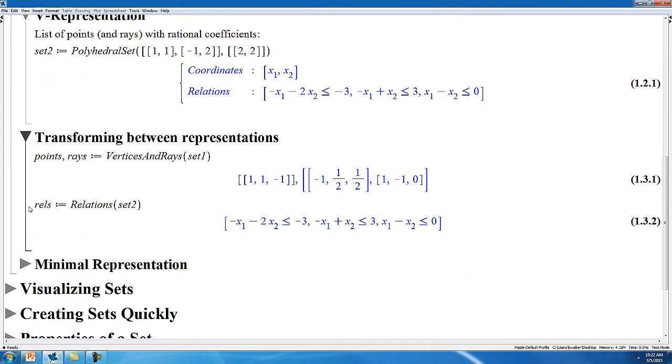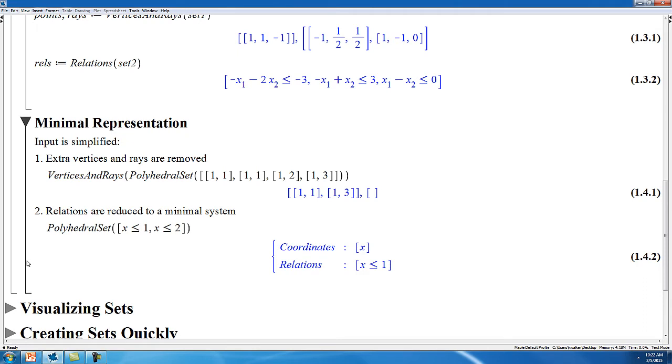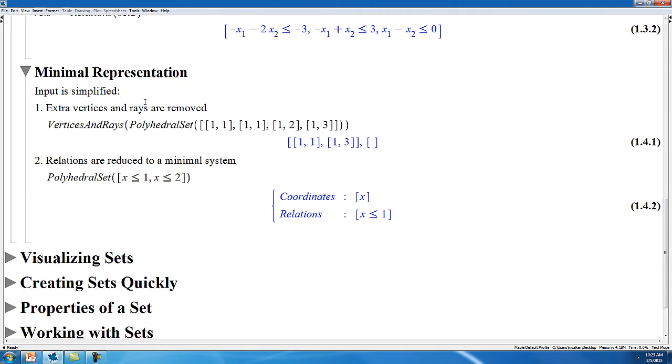Once you've created a set, you can easily get its V representation using the vertices and rays command, or its H representation using the relations command. The inputs are all simplified in Maple, so that the sets you're creating will have a minimal representation internally. This makes the sets more computationally efficient to work with, and can help show you what the structure of the sets look like. For example, any extra vertices and rays will be removed, and the relations will be solved to form a minimal system.